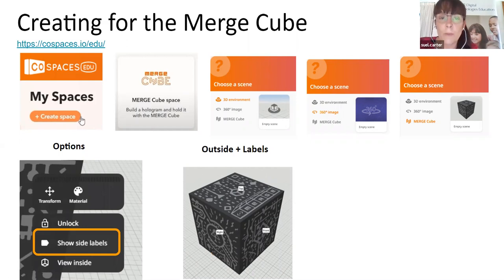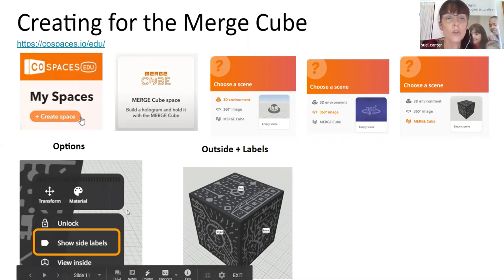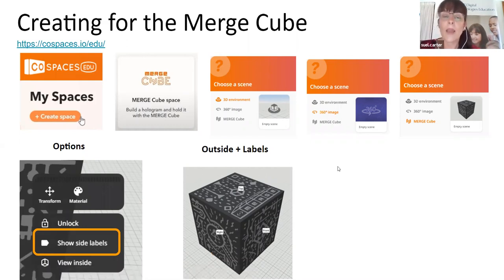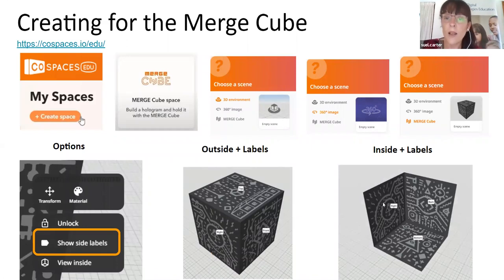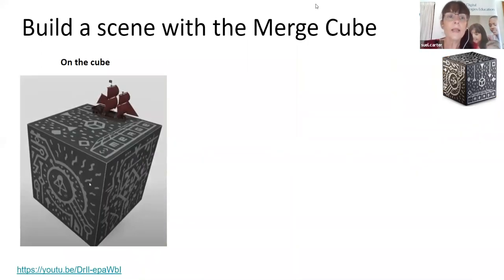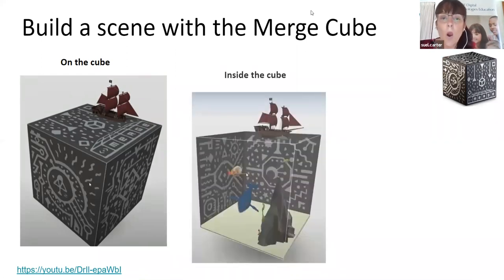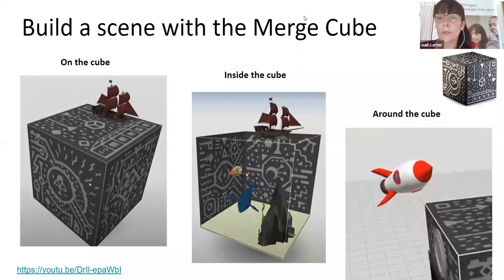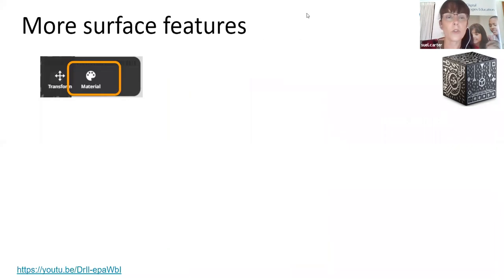In a moment I'll take you into CoSpaces and show you how this works. When looking at a Merge Cube, because it has six sides, quite often you don't know which side is which. If you right-click on the Merge Cube you'll see an option to show labels, and then you'll be able to orientate yourself around which part of the cube you're using. To build a scene, you can have something on the outside of the cube, you can build inside the cube like an aquarium, or you can have things floating around on the outside.